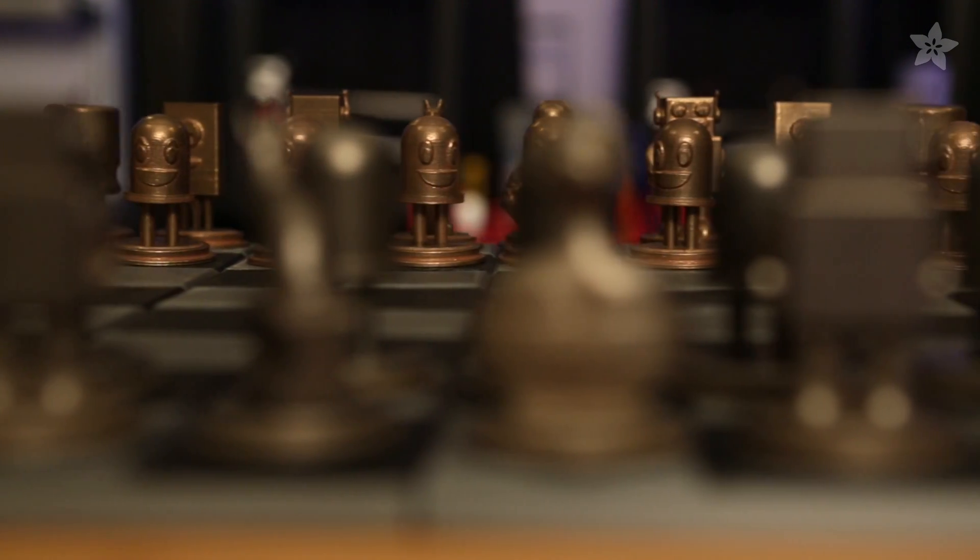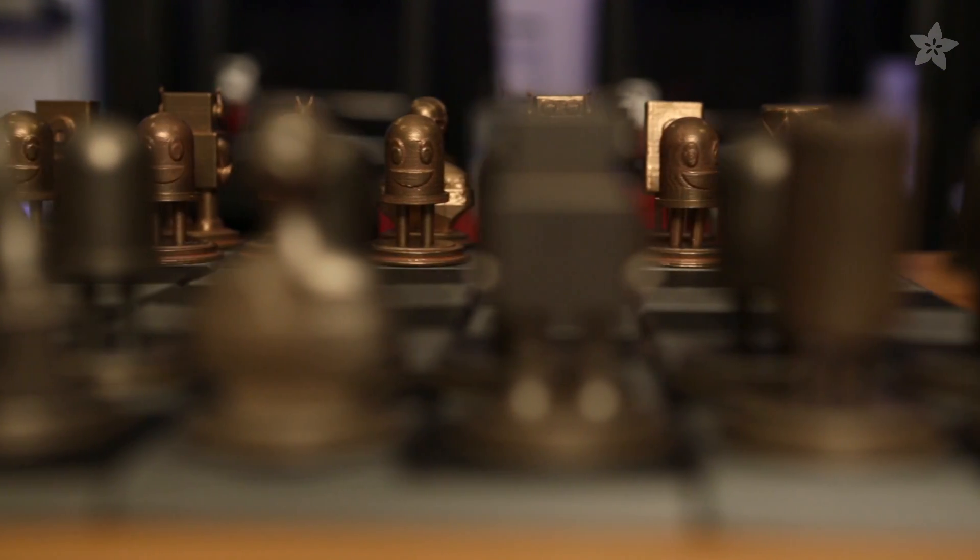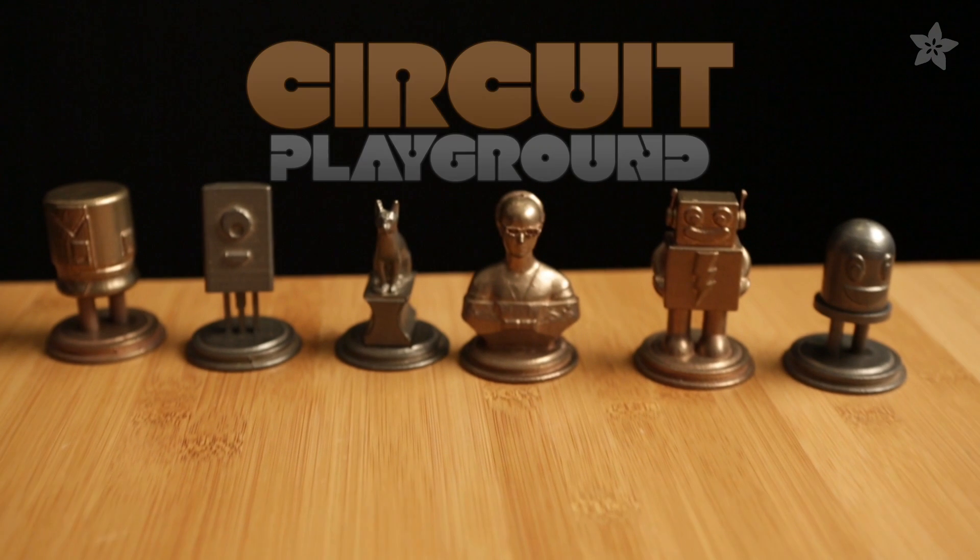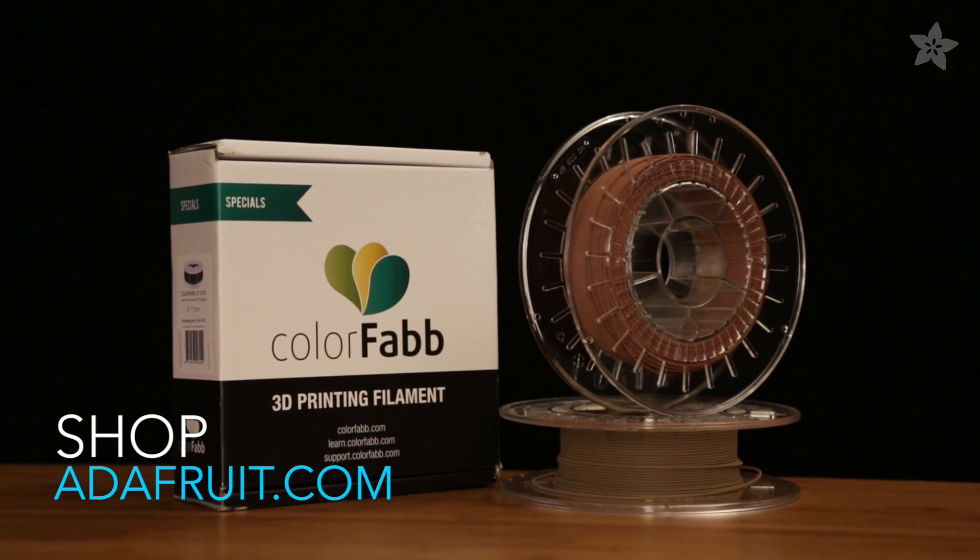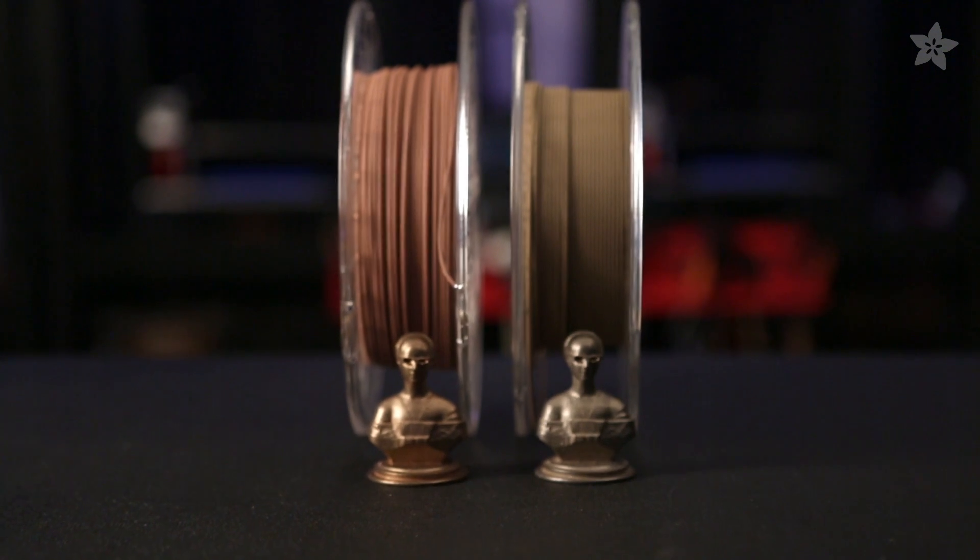Get ready to play with the Adafruit chess set. It's entirely 3D printed and features players from Circuit Playground. This filament contains actual metal particles, and in this video we're going to take a look at how to get the shimmer and shine so it doesn't look 3D printed.